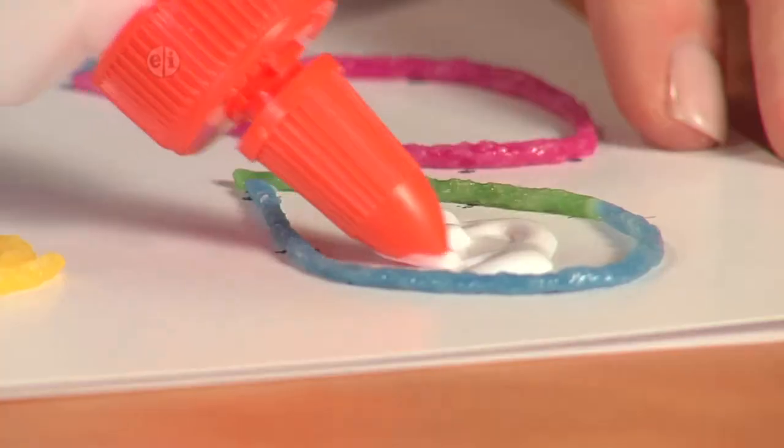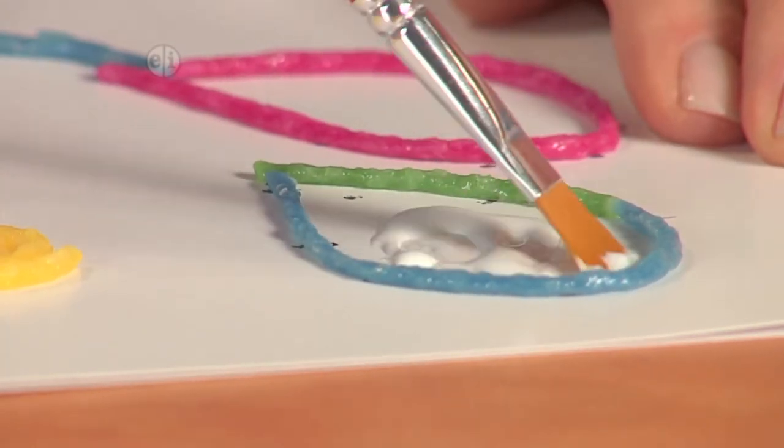Now I want to show you how to add sand. Take some craft glue and layer it into the inside of your balloon, then use a brush to brush it all around up to the edge. You can use any color you like. I'll make sure this is pressed all the way down and then add my layer of sand.